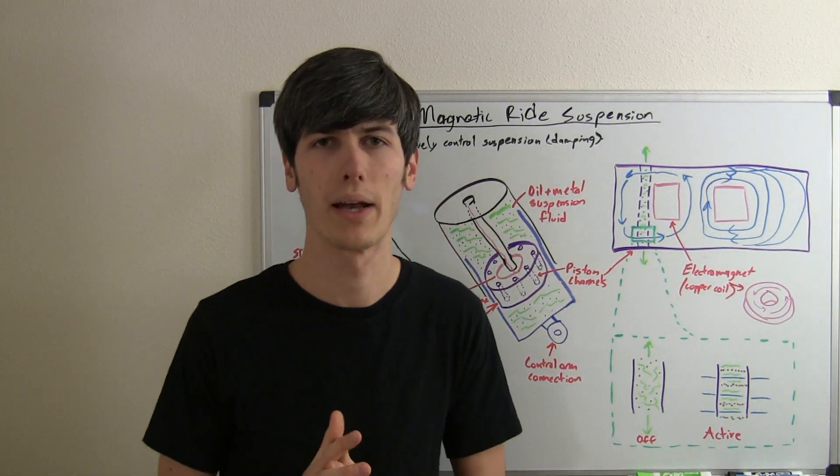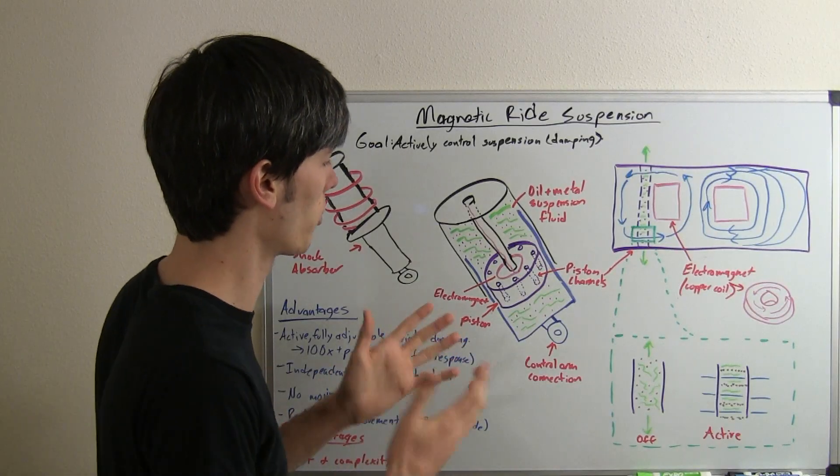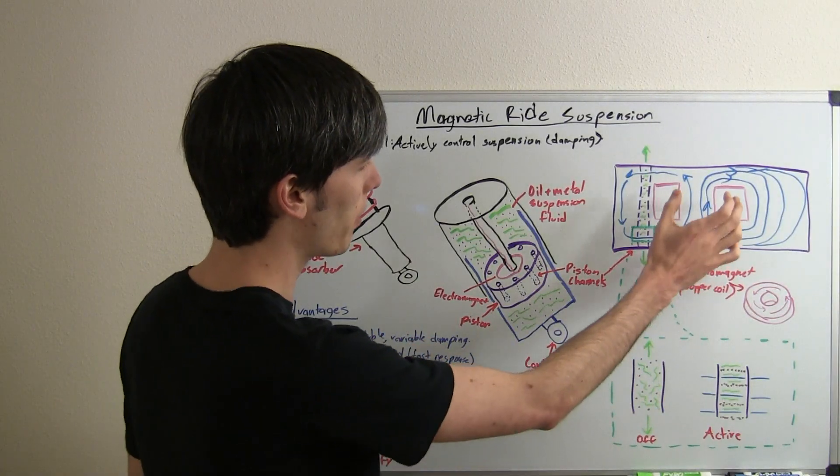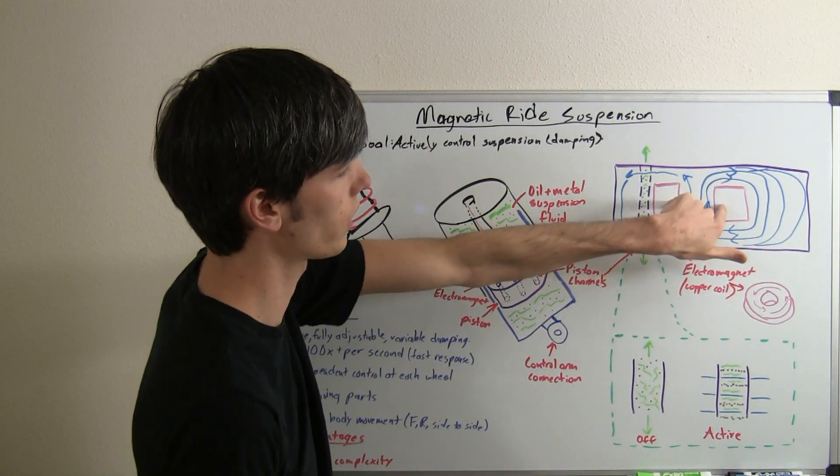Now, if you haven't yet watched my video on electromagnets, you'll want to check that out so you understand how electromagnets work. Basically, what we've got, if we look inside of this piston here, is here's our electromagnet.